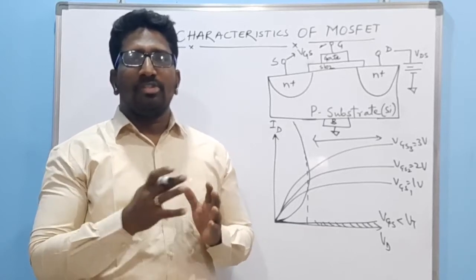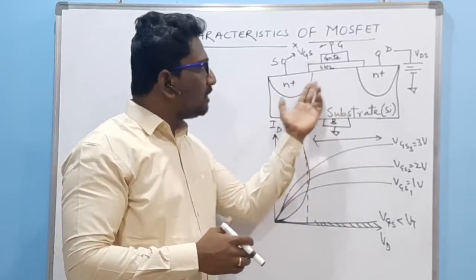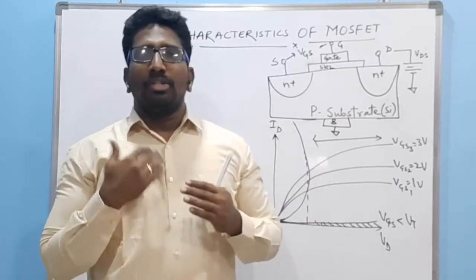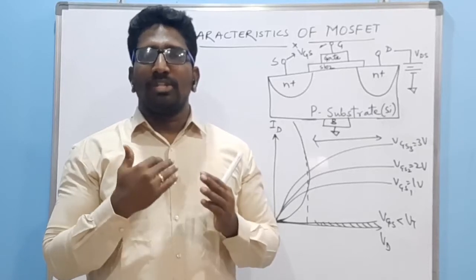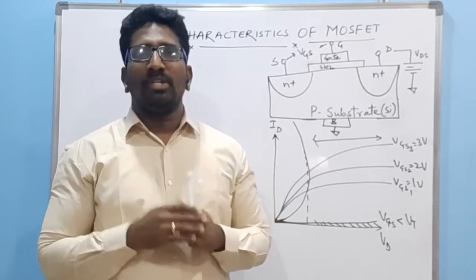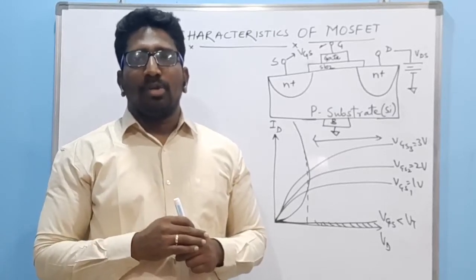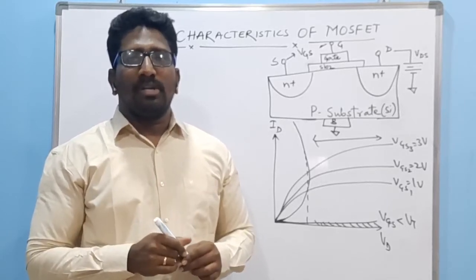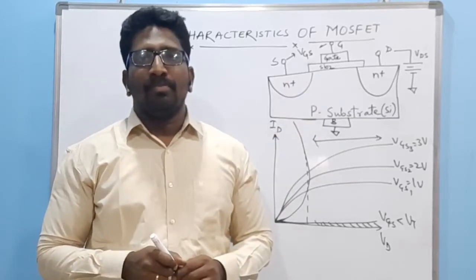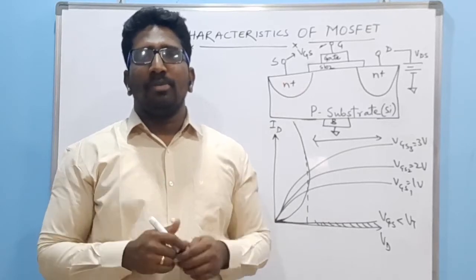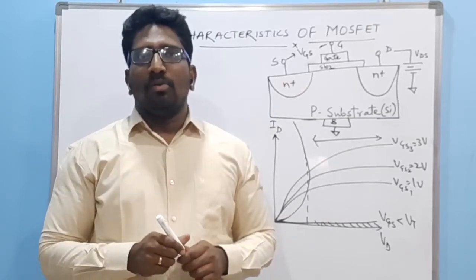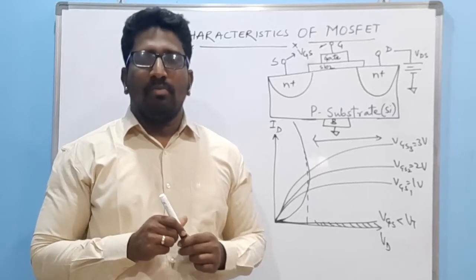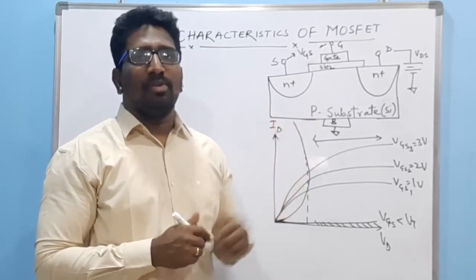The cutoff region is where there is no channel formed between the source and drain terminals. With no channel, there is no movement of electrons or charge carriers between source and drain, so no current is produced — the current equals zero. In this region, the transistor acts as an open circuit and can be used as an electronic switch.